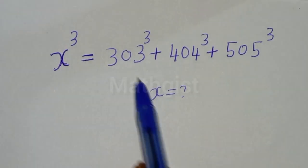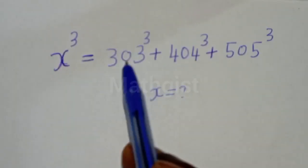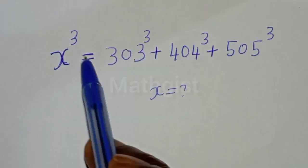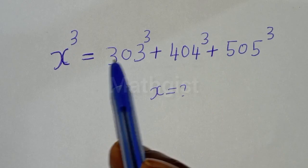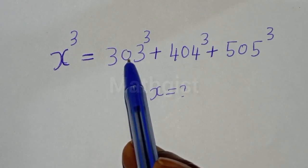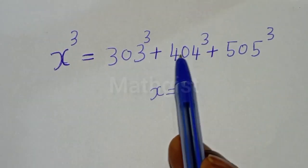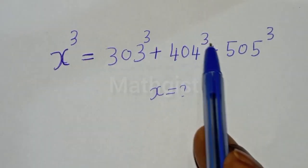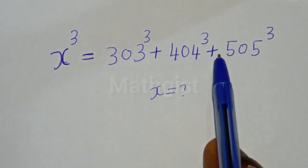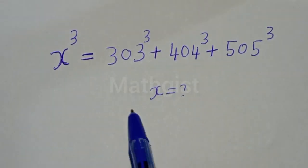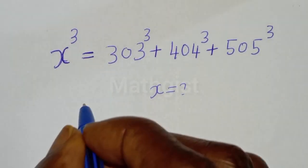Hello, we want to find the value of S from this given equation. S raised to power 3 is equal to 303 to the power of 3 plus 404 to the power of 3 plus 505 to the power of 3.